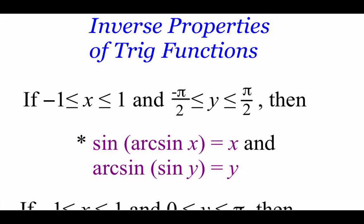So talking about some inverse properties when we're looking at trig functions. If we're looking at x values between negative 1 and positive 1, and y values between negative π/2 and positive π/2, then if we did the sine composed with an arc sine of x, we should get back just whatever that x value was. Similarly, if we were doing the arc sine composed with a sine of y, then we should just get back that y value.